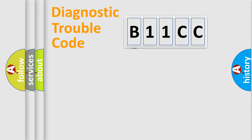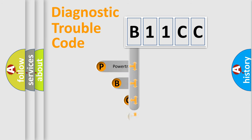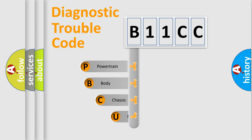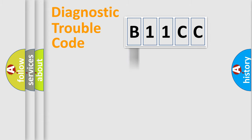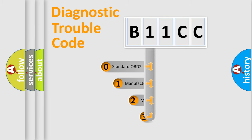First, let's look at the history of diagnostic fault code composition according to the OBD2 protocol, which is unified for all automakers since 2000. We divide the electric system of an automobile into four basic units: Powertrain, Body, Chassis, and Network. This distribution is defined in the first character of the code.